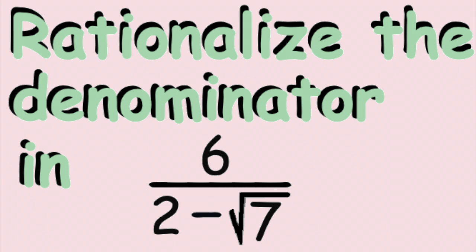We are given a rational expression, 6 divided by the difference 2 minus square root of 7, and the instructions either say rationalize, or more precisely, rationalize the denominator.